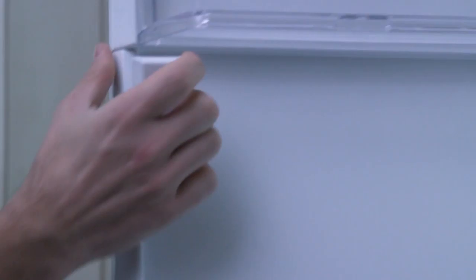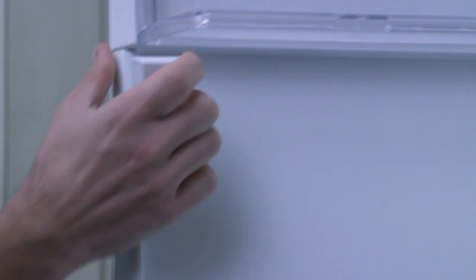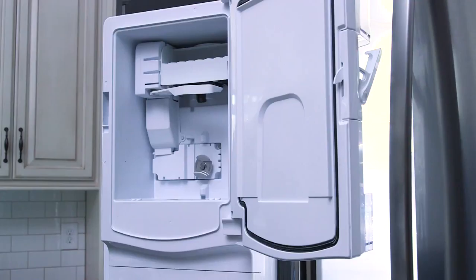Next, locate the ice maker inside the left side refrigerator door. Open the icebox door and remove the ice bucket to access the ice maker.